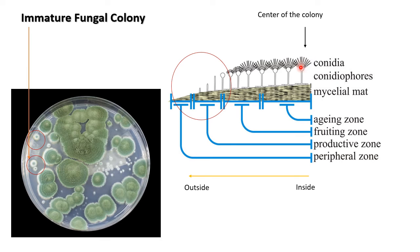So this is the center of your colony — this is the inside. You consider half of your colony here and move outward. At the center, you have mature conidia or conidiophores with a thick mycelial mat present. This is the aging zone — meaning the older part of your colony. After that comes the fruiting zone, which will have a different color compared to the aging zone. This is the fruiting zone which is still growing and conidia are developing. You can see three stages of conidiophore shown here — two of them already have conidia and the third one still has developing conidia.